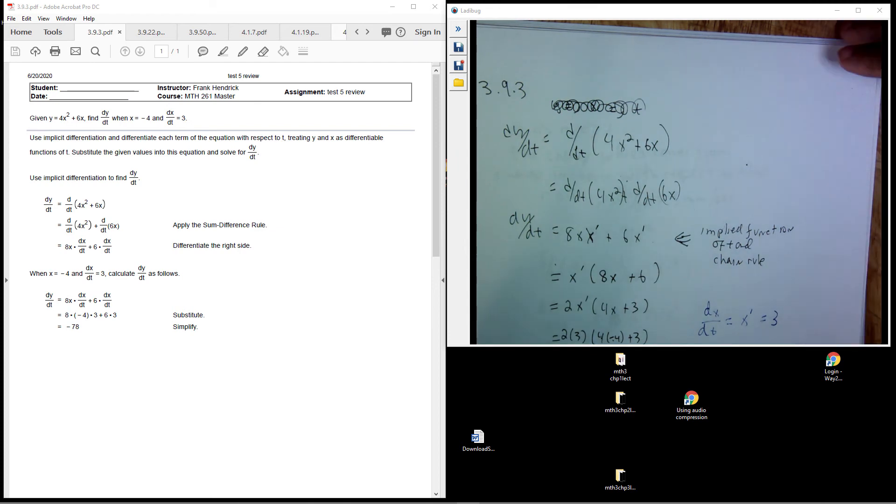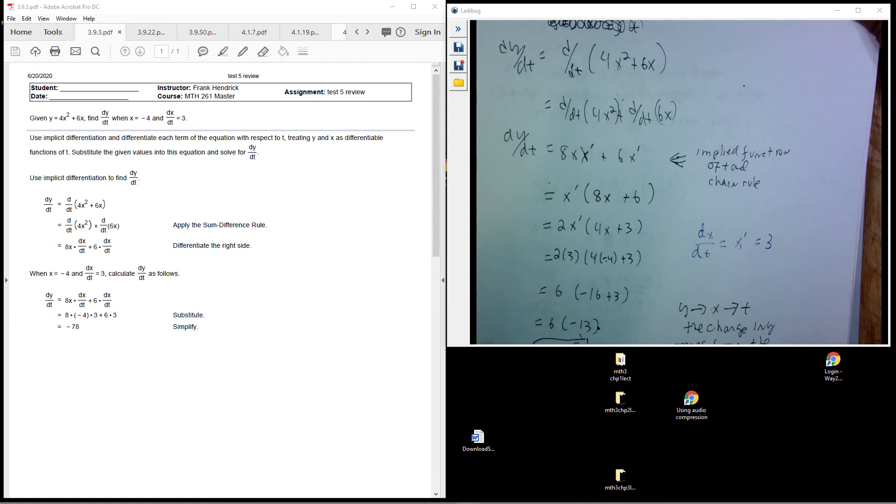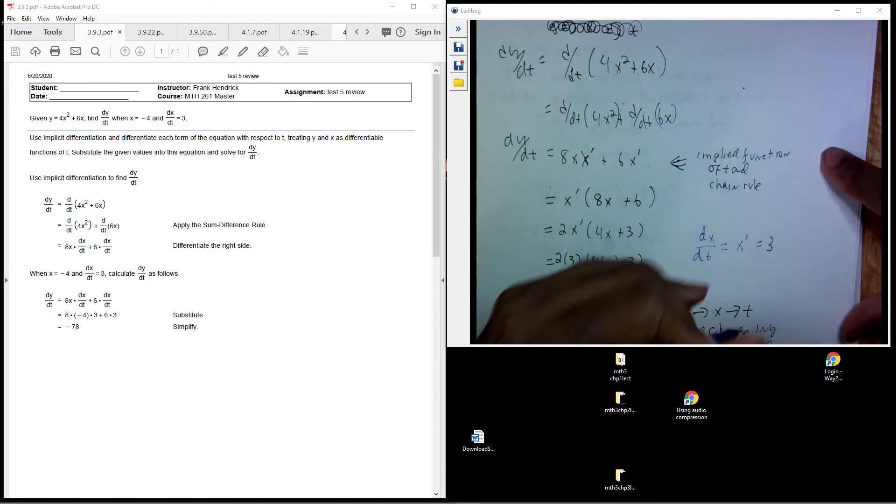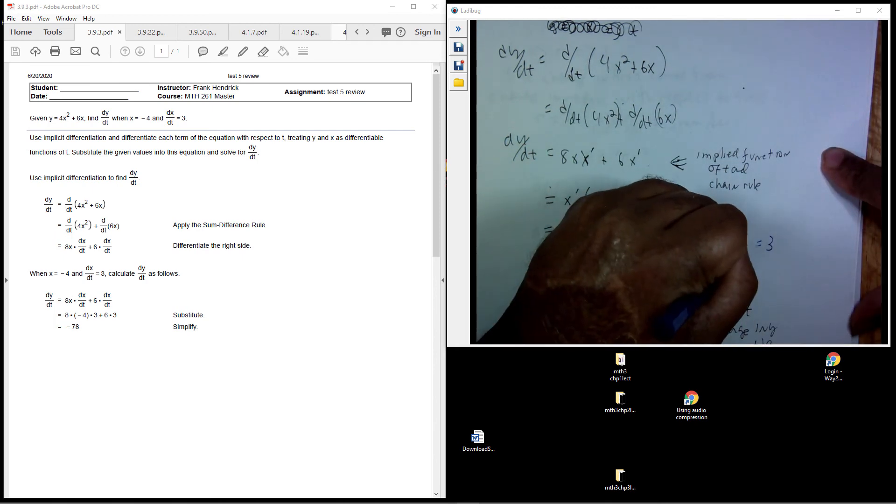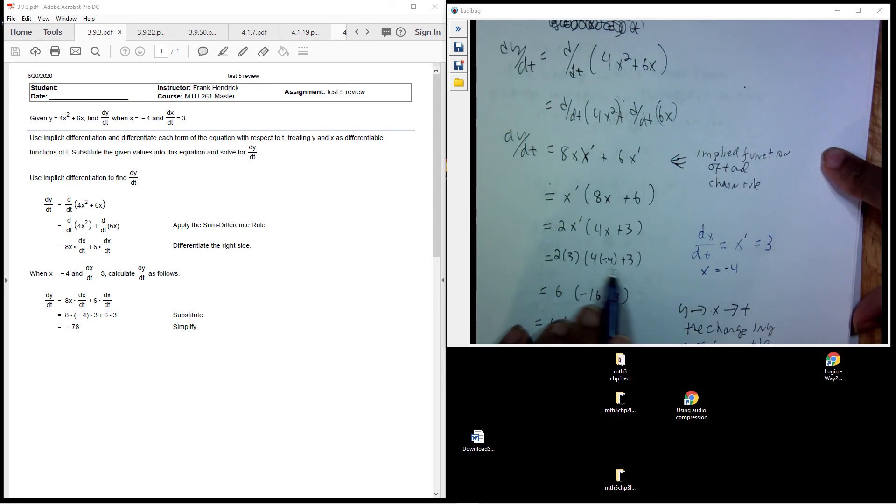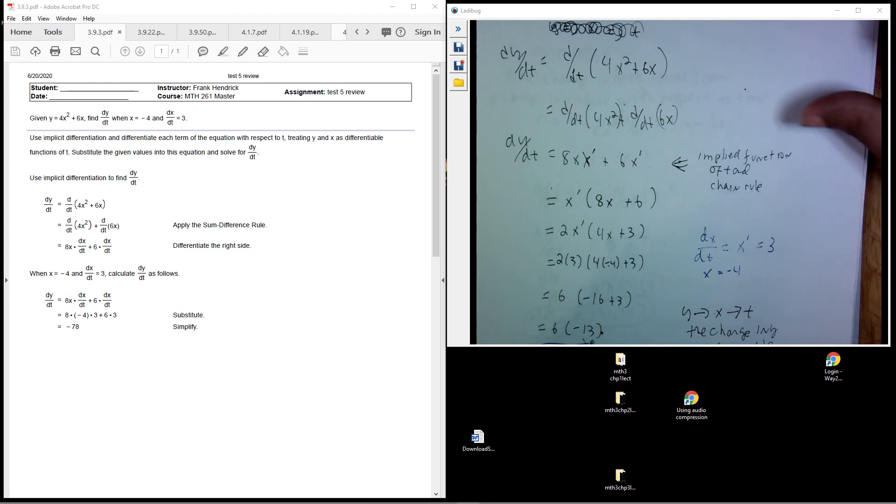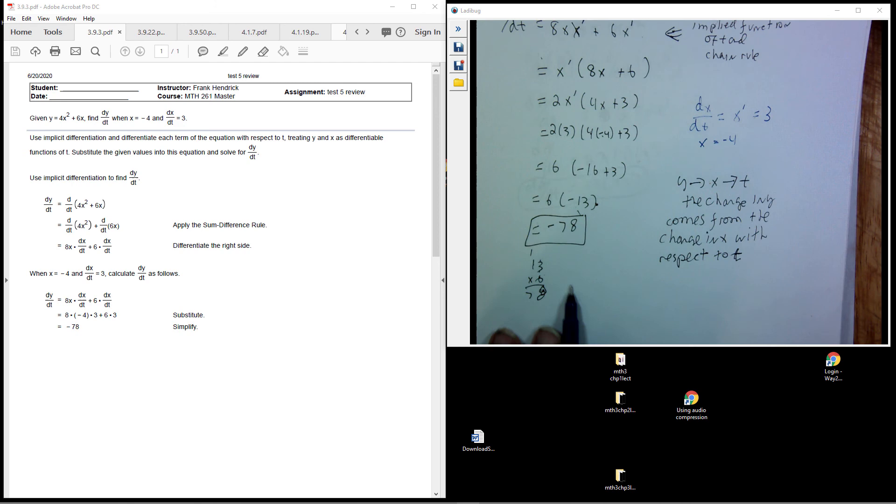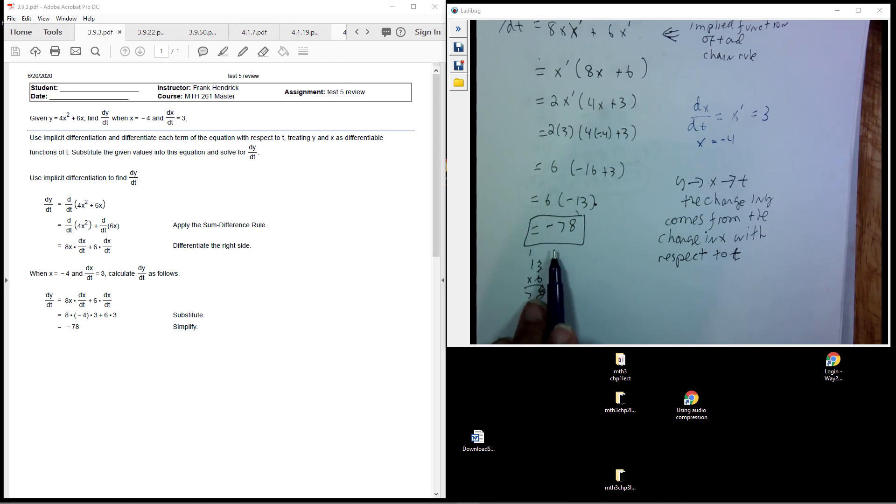So we can plug that in and replace it and simplify. We're given x equals negative 4, and we can plug that in here and find out what dy/dt is. We end up with dy/dt being negative 78, and that's our final answer.